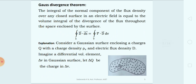The next concept is the Gauss Divergence Theorem. Its statement is: the integral of the normal component of the flux density over any closed surface in an electric field is equal to the volume integral of the divergence of the flux throughout the space enclosed by the surface. There are two parts: flux density over a closed surface equals the volume integral of the divergence of the flux density — that is the Gauss Divergence Theorem.